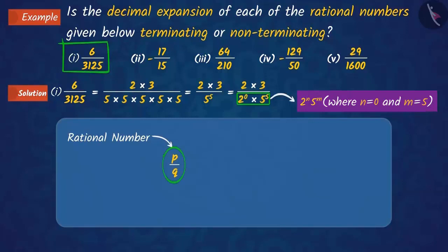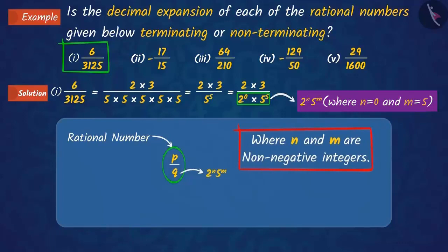In our previous video, we learned that in a rational number p upon q, if q is in the form of 2 raised to n into 5 raised to m, where n and m are non-negative integers, then the decimal expansion of the number is terminating.